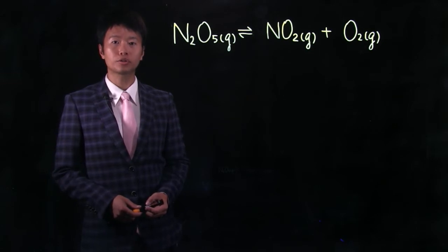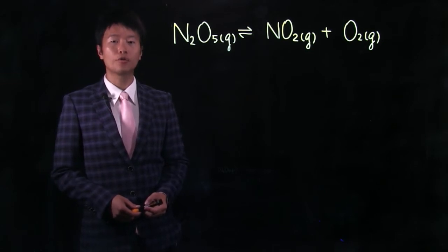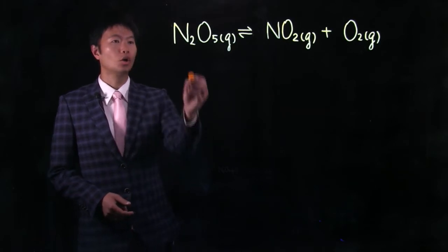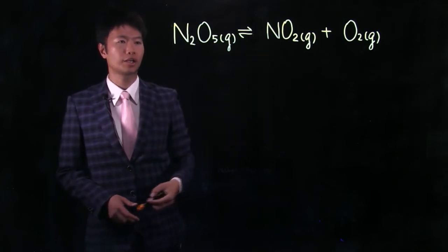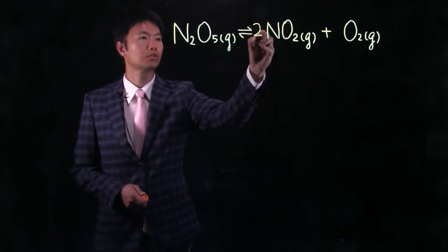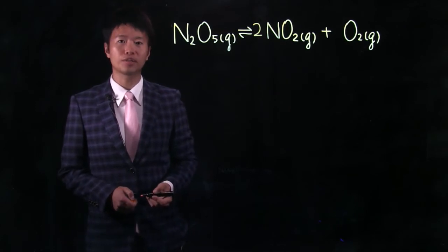In order to write down the reaction quotient for this chemical reaction, first we have to make sure this chemical reaction is balanced. So now let's take a look. We have two nitrogen on the left hand side and one nitrogen on the right hand side. So we should put a two on the product side, just to balance the number of nitrogen.